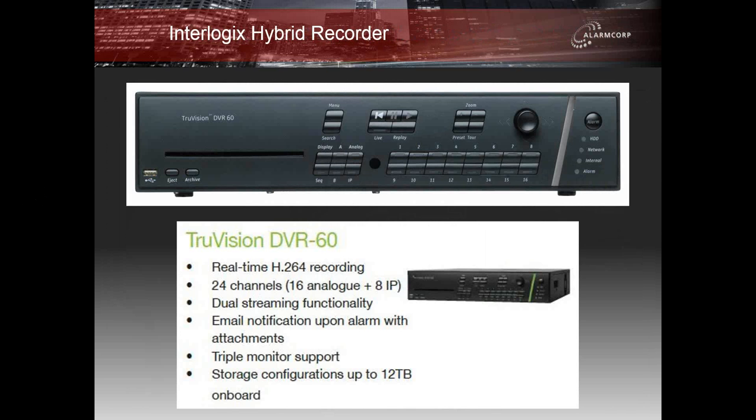Looking at another solution for small to medium size migration: the Interlogix DVR-60. It caters for both analog and IP in one recorder, with encoders effectively built in. It is a 24-channel device — 16 analog and up to 8 IP — and you can mix around depending on bandwidth limitations. This unit can have up to 12 terabytes on board. It is a good solution for customers who still want to maintain their existing analog infrastructure while getting the best out of a new IP system with enhanced resolution.